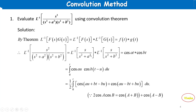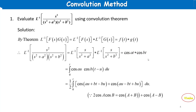Therefore, L⁻¹{ s/(s²+a²) } * L⁻¹{ s/(s²+b²) }. The first term is cos(at) and the second term is cos(bt). So f(t) = cos(at) and g(t) = cos(bt). Now we apply the convolution formula.